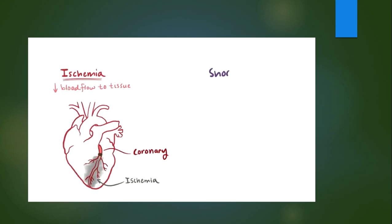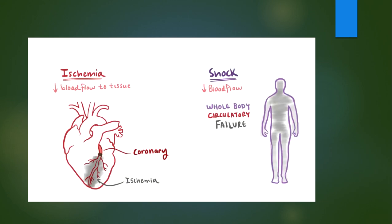Shock is like ischemia but on a global scale. In other words, it's a whole body circulatory failure where blood flow to tissues is dangerously low, leading to cellular injury, possibly damaging multiple organs and even leading to multiple organ failure if not treated immediately.